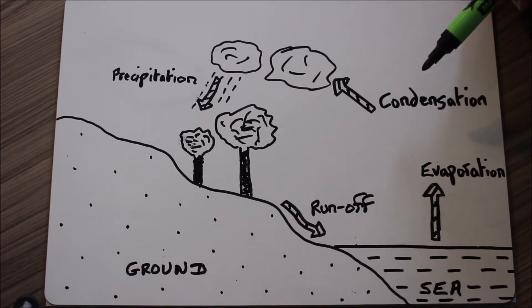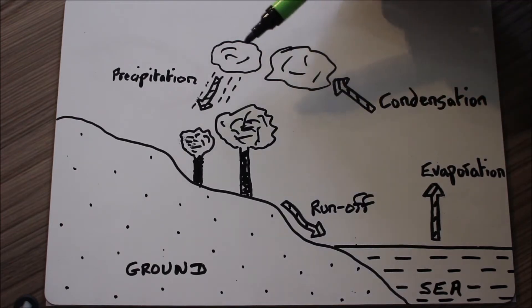The third process is precipitation. This is any way in which water falls out of clouds, i.e. rain, snow, sleet and hail.